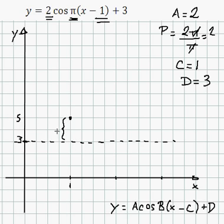Because, again, this is the amplitude. And cosine always starts at the maximum. So instead of starting here, it was shifted up to the right by 1 because of c.